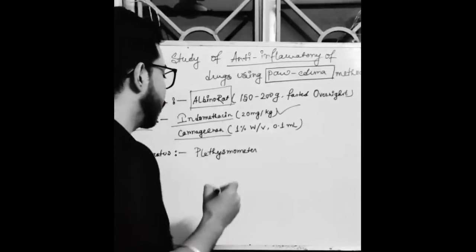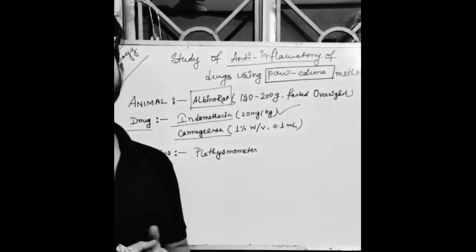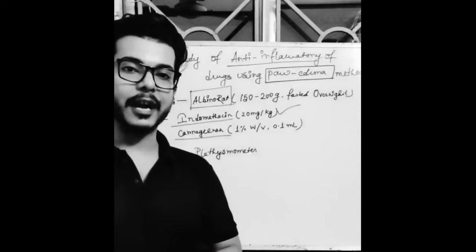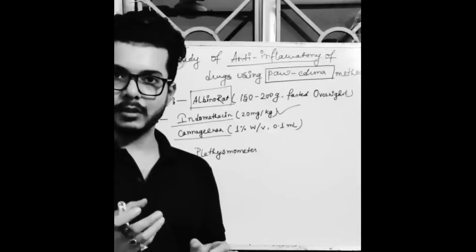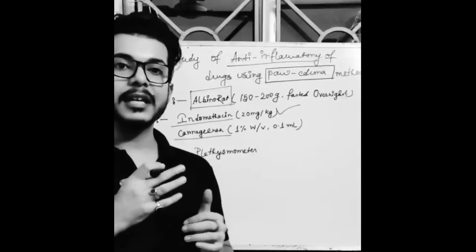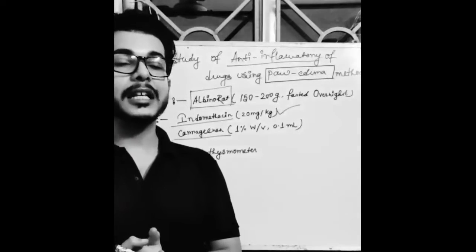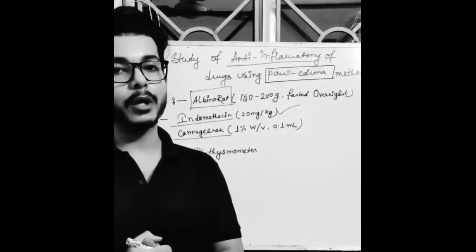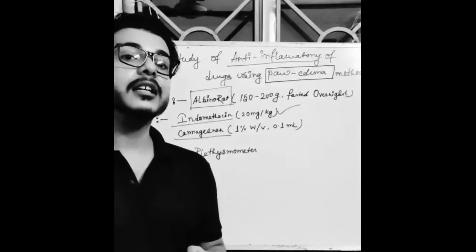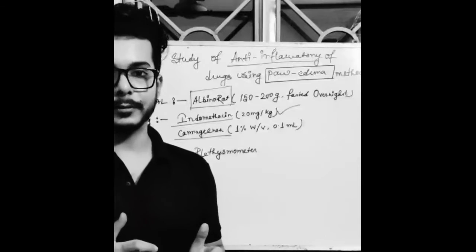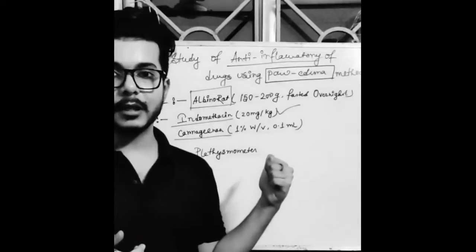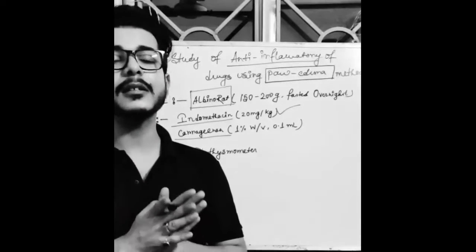Another substance we are using is carrageenan — C-A-R-R-A-G-E-E-N-A-N. Carrageenan is a mixture of polysaccharides obtained from seaweed, basically red or purple colored seaweed. In overdose, carrageenan causes inflammation and edema, because carrageenan is used in the food industry as a thickening agent — it has a tendency to build up or retain fluids. So when given in overdose to an animal body, it causes swelling or inflammation.